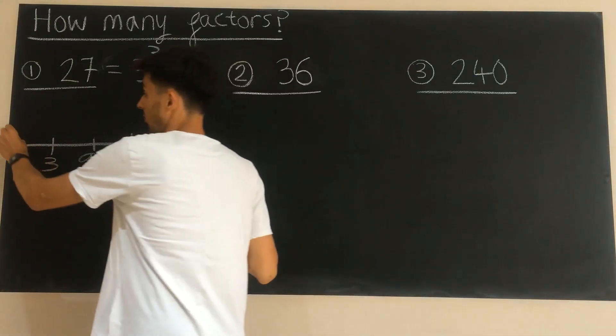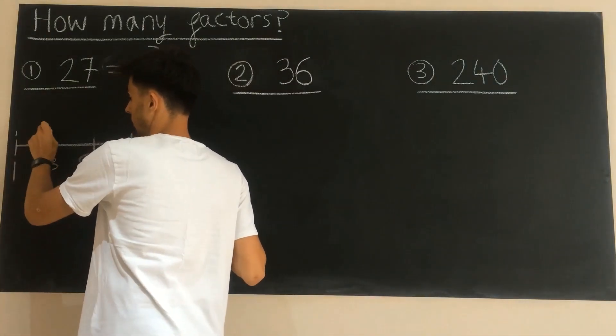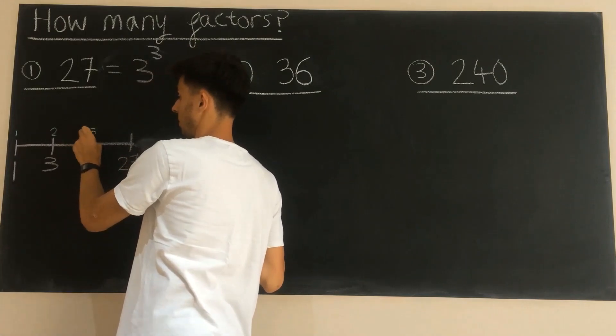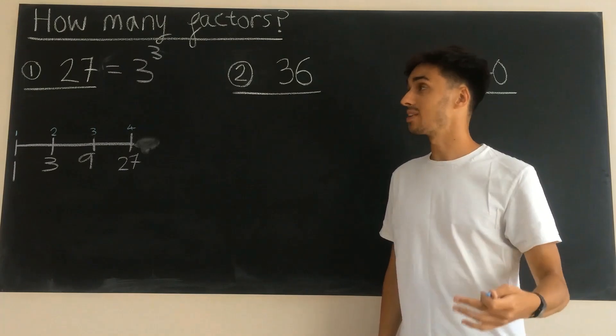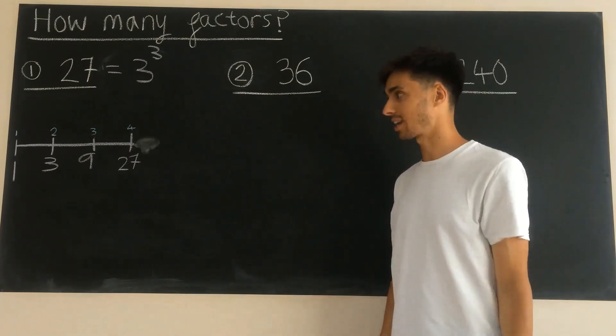So you can see here we've got 1, 2, 3, 4 of those nodes. And that means that 27 has got 4 factors.